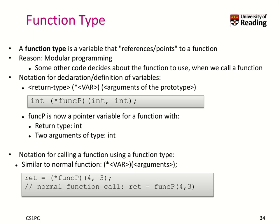Our last type is a bit complicated — it's the function type. A function type is basically a variable that stores a function that we would like to call. This is often used in modular programming, where you can make a decision about which function you'd like to call separately from where you call it. The declaration and definition of the variables is a bit unusual — you have to get used to it.